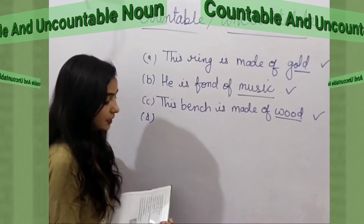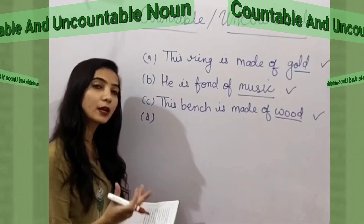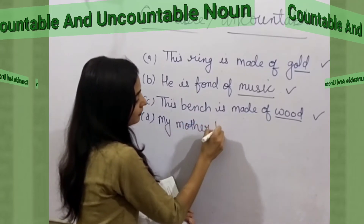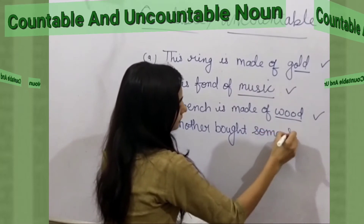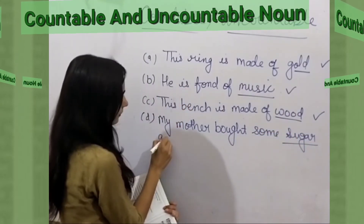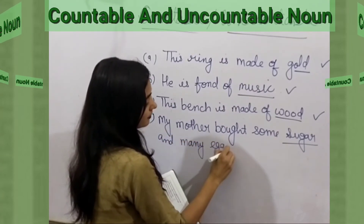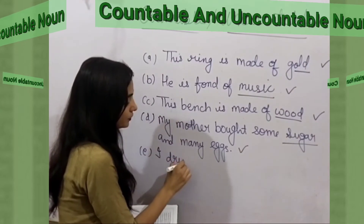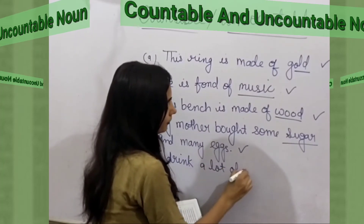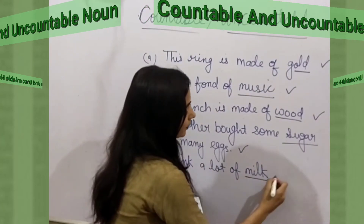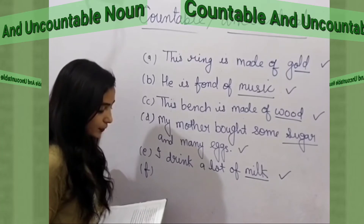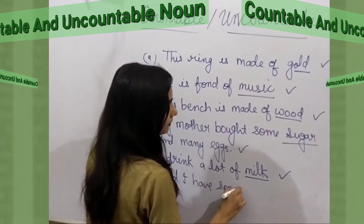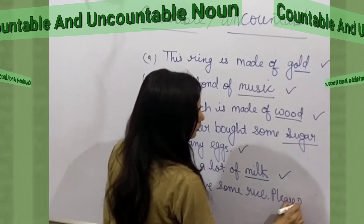Next: 'My mother bought some sugar and many eggs' — this is correct, not 'six sugar,' because we cannot count uncountable nouns as one, two, three. Next: 'I drink a lot of milk' — not 'lots of milks.' This is correct. Next: 'I have some rice, please' — this is correct, and rice is an uncountable noun.